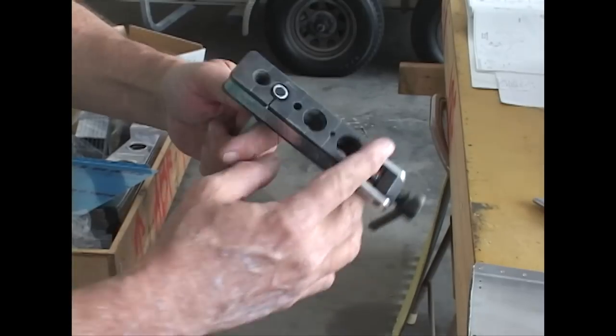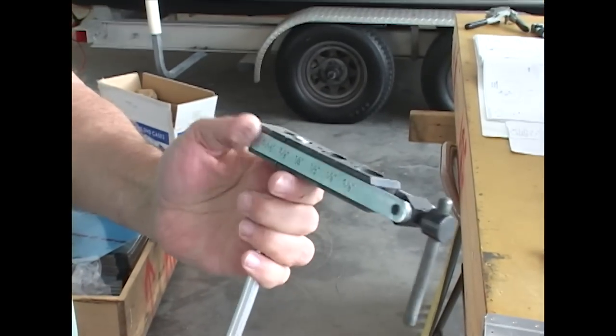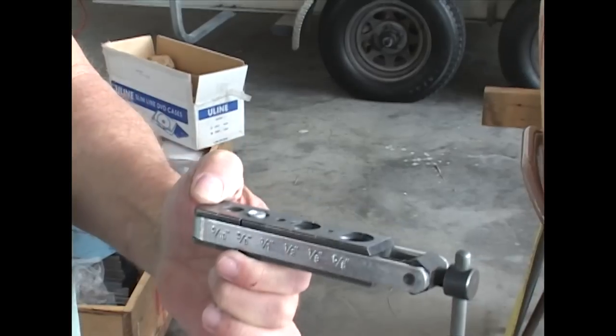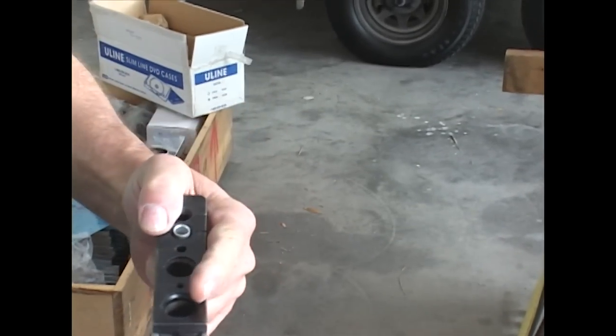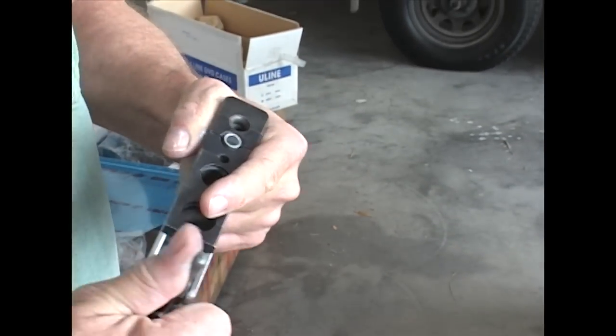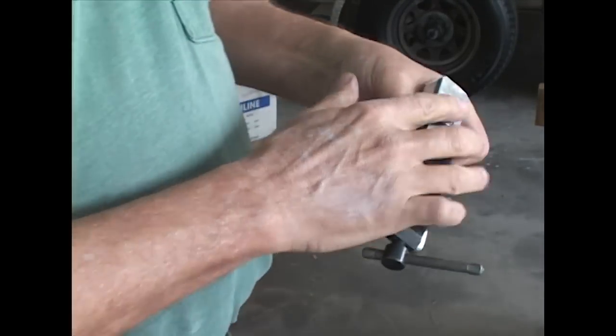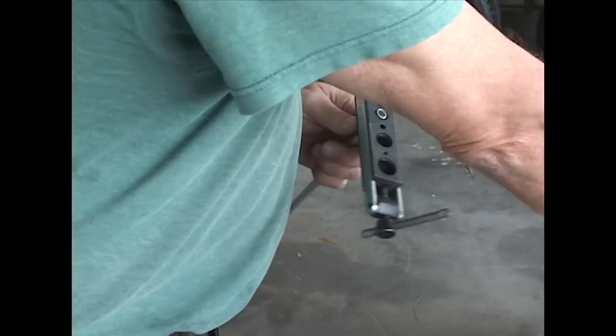And then what I do is I put that in the tool so that it's just proud of the surface, maybe a 64th of an inch or so sticking up. Not too much. If you have too much sticking out, the flare will be too big. You'll never get the nut on it.